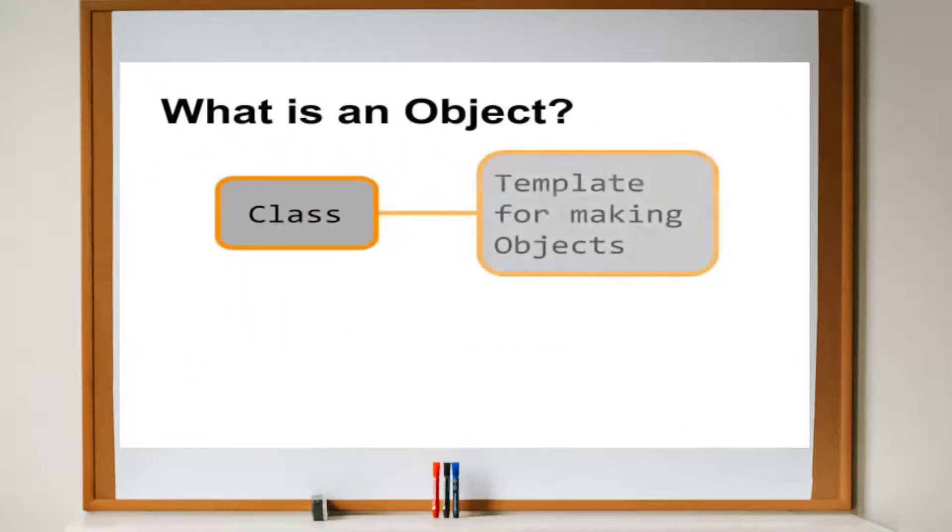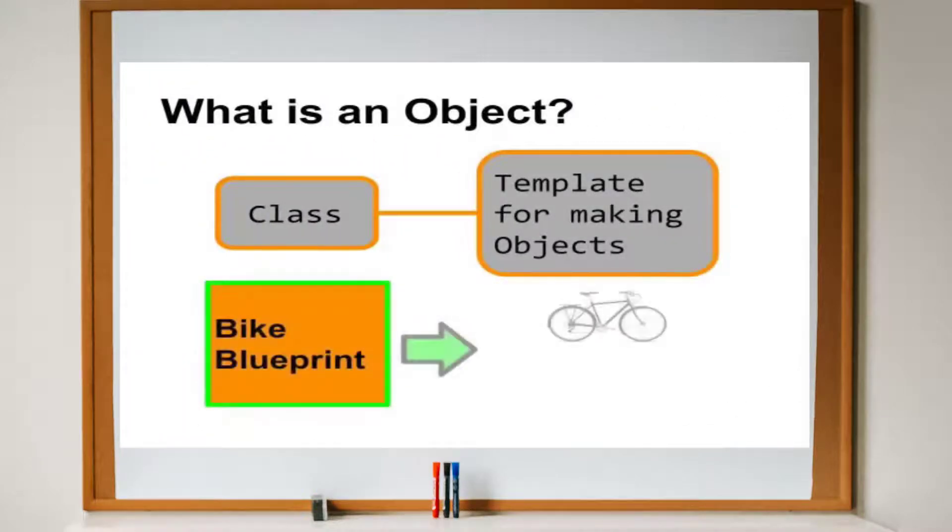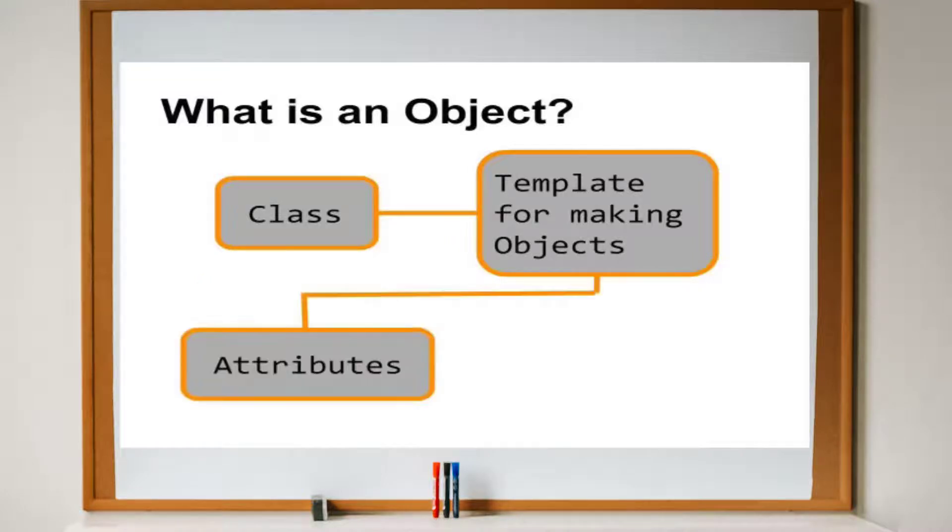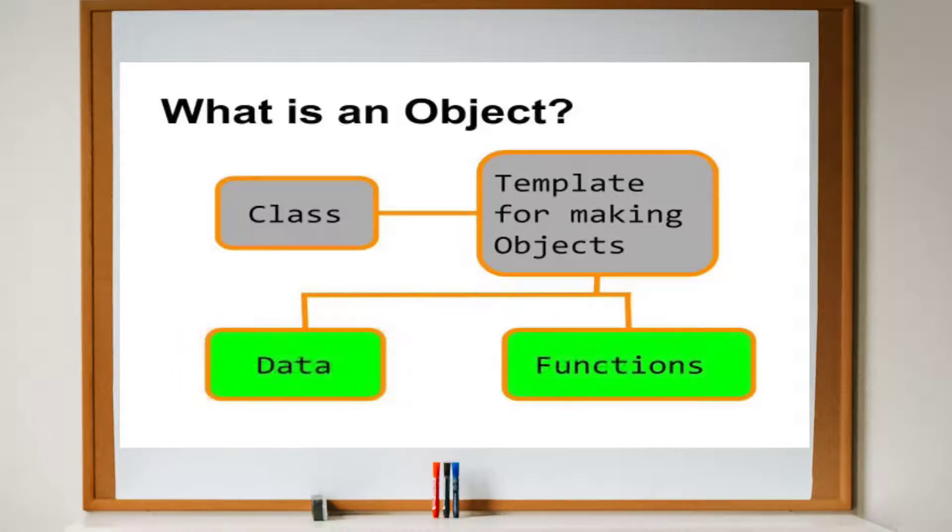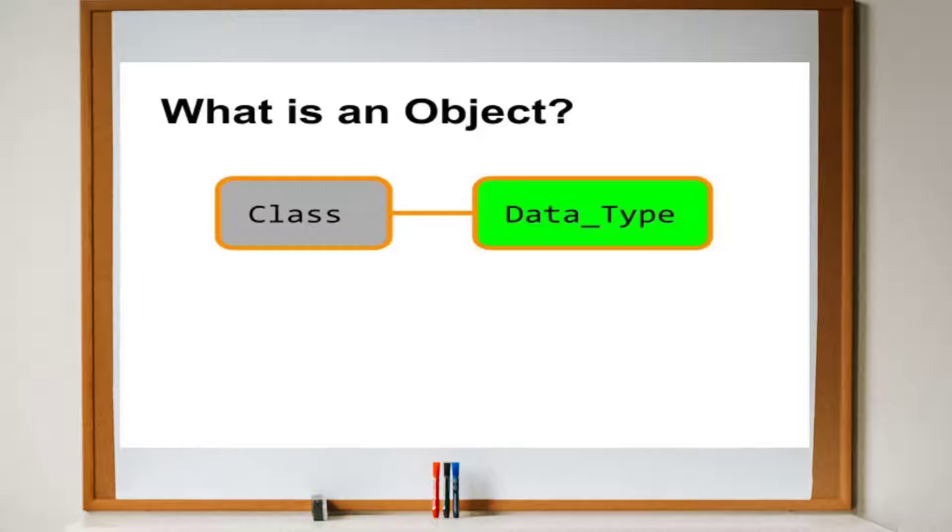In object oriented programming, a class is a template for creating objects. The template is a particular set of attributes and behaviors. Objects implement these attributes as data, and behaviors as functions. A class is a data type, and an object is a variable of that class.